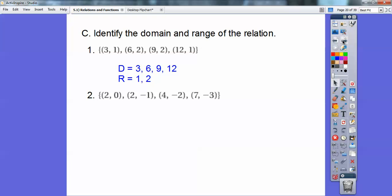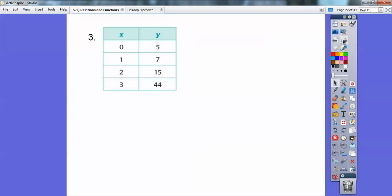What about this one? So here the 2 is repeating for the X's, so your domain is 2, 4, and 7. And your range is 0, negative 1, negative 2, negative 3. Sometimes your books put them in order from smallest to biggest, but I don't care. So if they do, just know how to rearrange them.